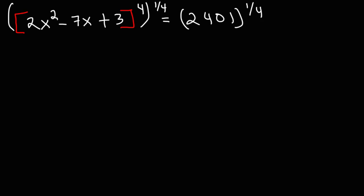Whatever you do to the left side of the equation, you need to do also to the right side as well so that the value on both sides remains the same. Now when you raise one exponent to another exponent, you need to multiply. 4 times 1 over 4 is just 1, so the fours will cancel. We're just going to get 2x squared minus 7x plus 3 on the left side.